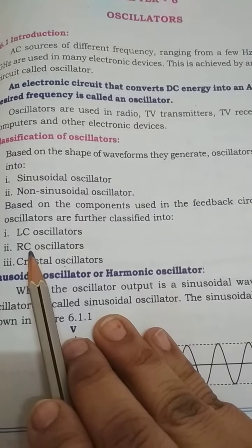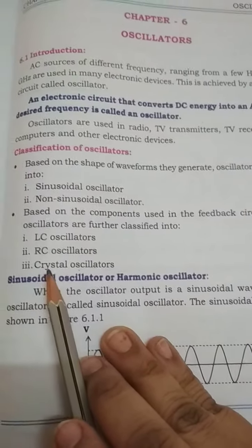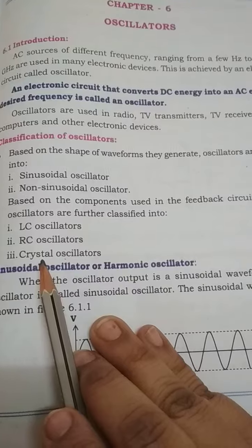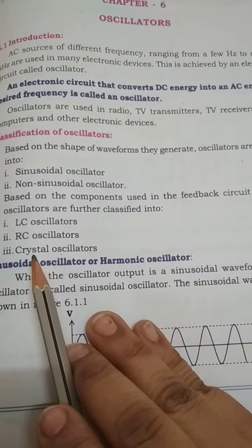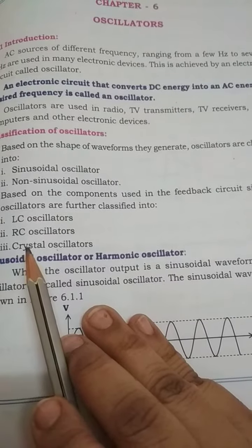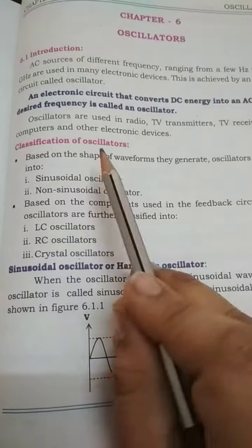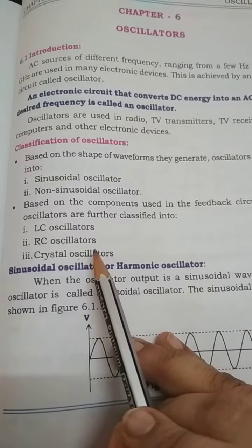If resistor and capacitor are used then they are called as RC oscillator. And there is another type of oscillator called as crystal oscillator. Here they use the crystals, piezoelectric crystals, the crystal which demonstrate piezoelectricity. We will study about it. They are called as crystal oscillators. These are the classifications or the types of oscillators.